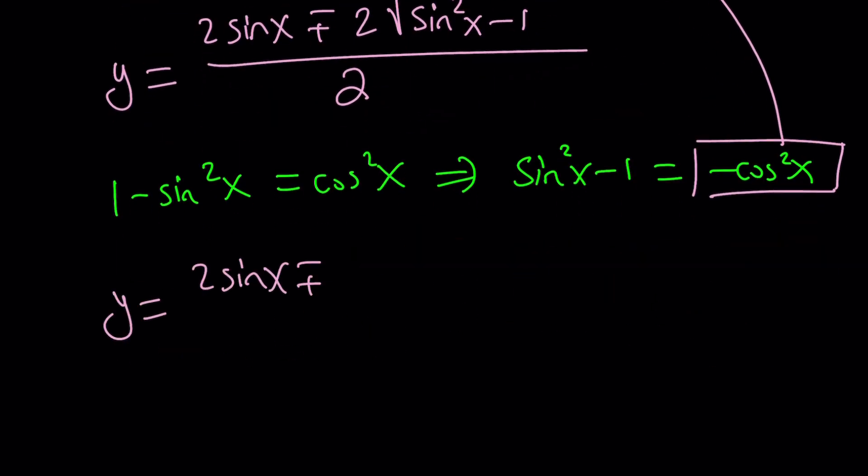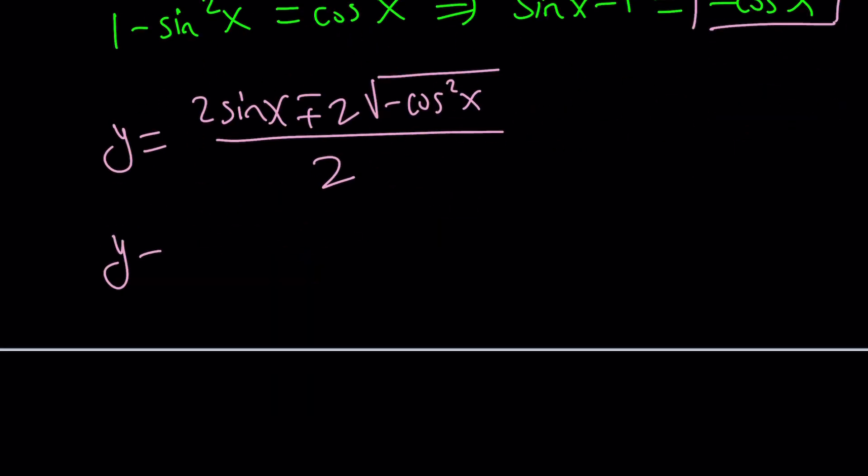Let's go ahead and plug it in and see what happens. 2 sine X plus minus 2 times square root of negative cosine squared X divided by 2. And of course, we can divide everything by 2 and write this as sine X plus minus the square root of negative cosine squared X. Well, can you square root cosine squared? Yes, with the absolute value, you're going to get two values. But what about negative cosine squared X?